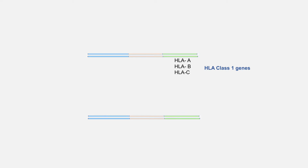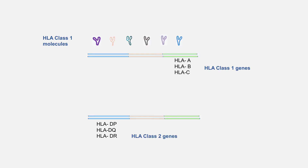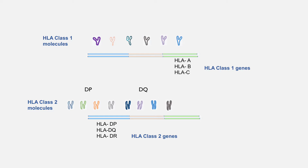In HLA class 1 region, three genes are present on each chromosome. So if a person has different alleles of these genes on both chromosomes, they can have up to six different types of HLA class 1 molecules. In case of HLA class 2 genes, these genes encode both alpha and beta peptide chains. For HLA DP and DQ, if alleles encoding alpha and beta chains differ on both chromosomes, a person can have up to four different types of HLA DP and four different types of DQ molecules.